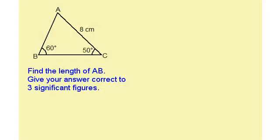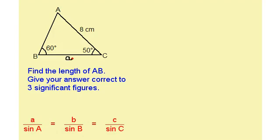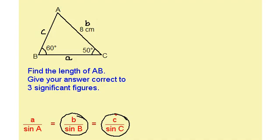To answer this question, the first thing I need to notice is that I am given two angles and a side, so I must be using the sine rule. I now need to label my sides. Opposite angle A is a. This one here is B and this one is C. I've got angle B and side B, so I'm definitely using that part. And I want to find the side AB, which is C, and I've got angle C, so I'm going to use that part. So I now have C over sine C equals B over sine B.